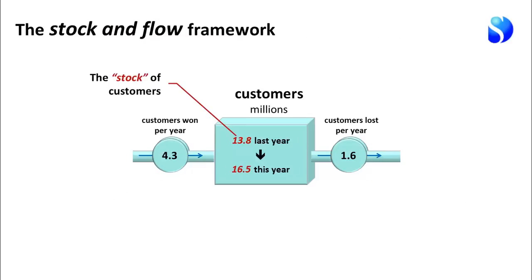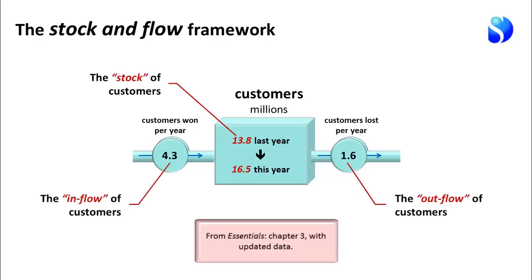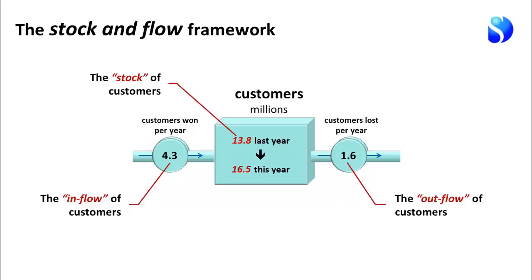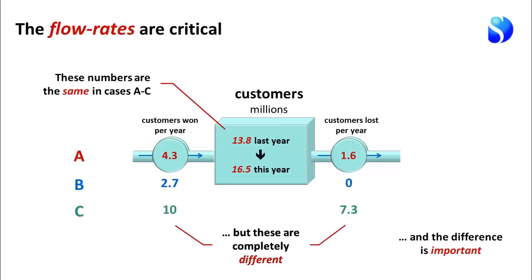Here is the stock of Ryanair's customers. Last year we ended with 13.8 million; this year we ended with 16.5 million. That implies we won more than we lost. Plausible estimates are that we had an inflow of 4.3 million new people who started flying with the airline during the last 12 months, while 1.6 million customers stopped using it. Those numbers are not actually reported by the company, but they are plausible estimates. And why they are important is that three different scenarios — all starting and ending with the same customer numbers — have completely different win and loss rates, and that difference really matters.